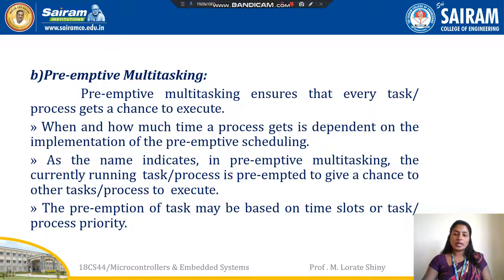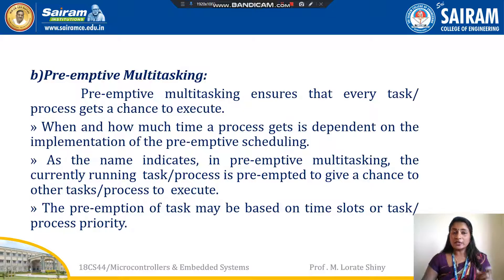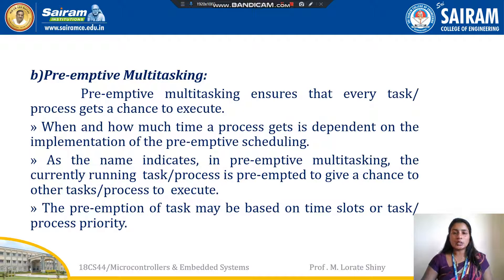Next is preemptive multitasking. Preemptive multitasking ensures that every task or process gets the chance to execute. But when and how much time each task or process can hold the CPU depends on the implementation of preemptive scheduling. In preemptive multitasking, the currently running task or process is preempted — meaning its execution is temporarily stopped — to give a chance to other tasks or processes to execute. The preemption may depend on the time slot or task or process priorities, so it is time-based or priority-based.